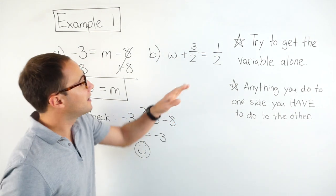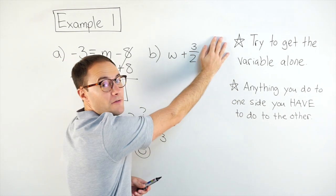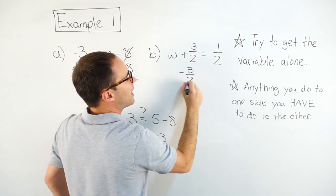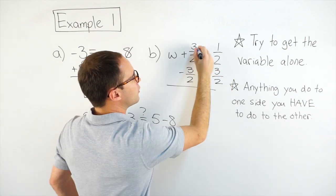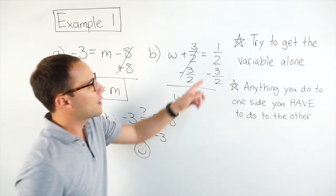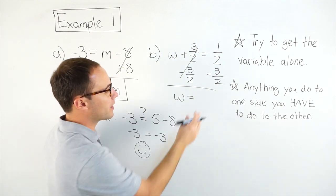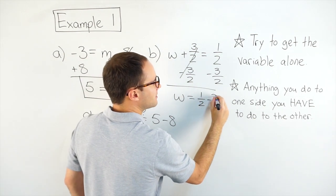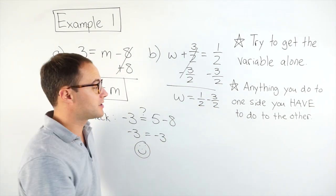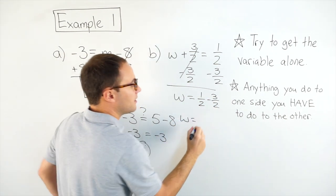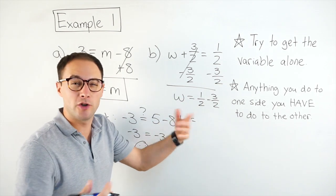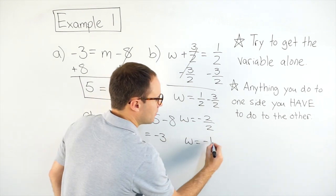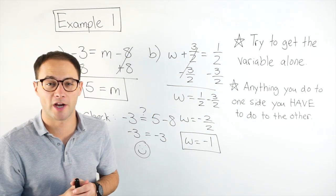w plus 3 halves equals 1 half. Again, I'm going to focus where that variable is. We're adding 3 halves to it. So to get rid of that 3 halves, I'm going to subtract 3 halves from both sides. Those go away, and I'm left with w equals 1 half minus 3 halves. If I want to show that work, if you're a little unsure, 1 half minus 3 halves. They already have common denominators, which is really nice. So it basically is just 1 minus 3 in the numerator, which is negative 2 over 2, which is the same as negative 1. So there is my solution. Here are some to try on your own.